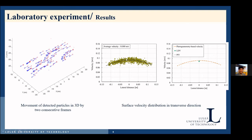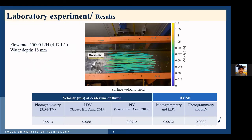A 3D component velocity vector can be computed from that. The figure on the right shows the surface velocity distribution in the transverse direction of the channel, and we can see that the maximum velocity is found at the center line along the channel. This velocity was compared to independent measurements. The surface velocity field is shown in this figure, and the measured velocity along the center line of the flume is compared to a profile previously measured by PIV and LDV. We can see that the velocity obtained by photogrammetry is in good agreement with the PIV and LDV results.